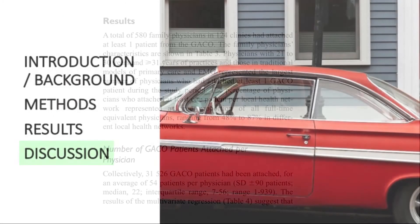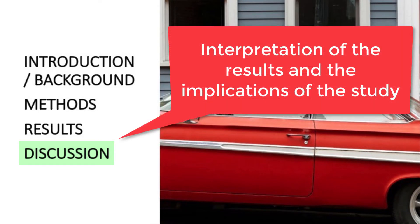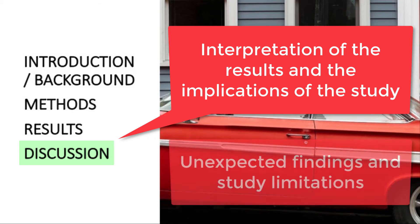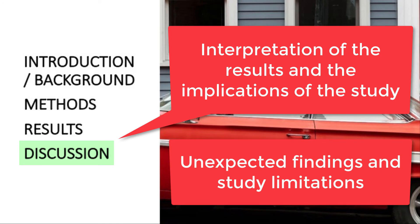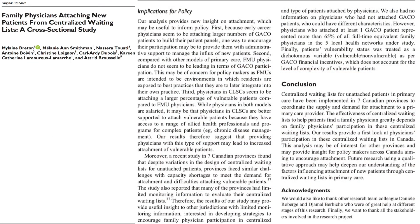The discussion includes the interpretation of the results and the implications of the study. For example, the authors may connect the current findings to earlier work discussed in the background section. They may also discuss unexpected findings and study limitations. In this discussion section, the authors place the results in context. Here, for example, we're told how the findings may inform future policy.